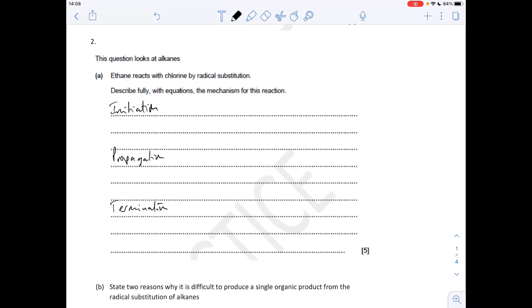Question two: we've got to describe the mechanism for the reaction between chlorine and ethane. The three key steps are initiation, propagation, and termination. For initiation first, your chlorine molecule is reacted with UV radiation and you get two chlorine radicals. I would always put in there that that's homolytic fission.